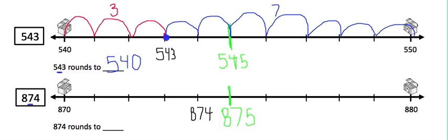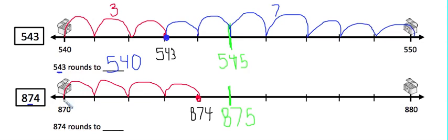Next, we need to figure out how far away 874 is from 870 and from 880. First, let's see how far away it is from 870. We're going to start at 874, the number that we're rounding, and jump backwards to 870, so count the jumps with me: one, two, three, four. So 874 is four numbers away from 870.